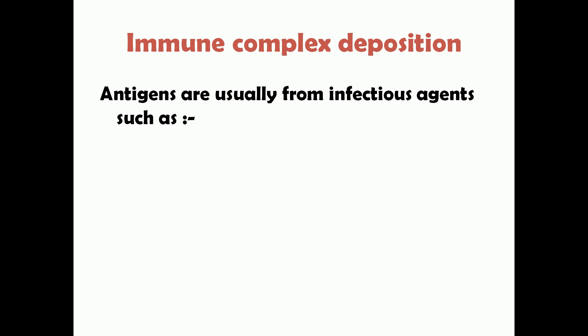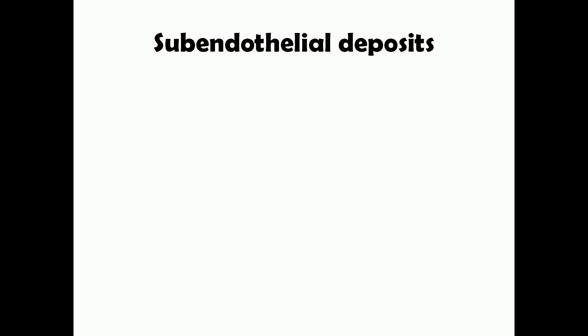An immune complex is formed between an antigen and an antibody. In MPGN, the antigens are most often from infectious agents such as hepatitis B virus, hepatitis C virus, and HIV. In chronically infected patients, viral antigens form immune complexes with antibodies, which then get deposited in the glomeruli. The most common site is beneath the endothelium — known as subendothelial deposits.